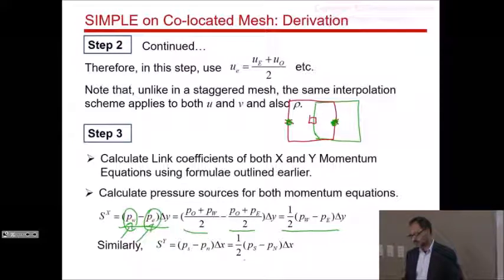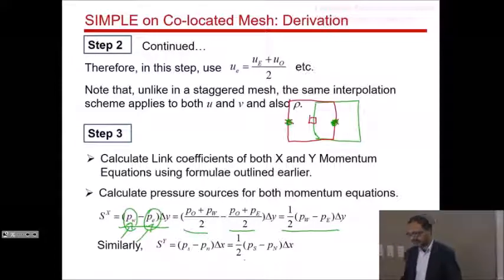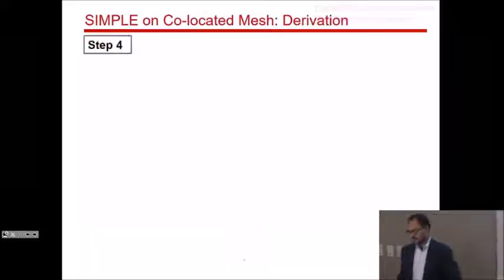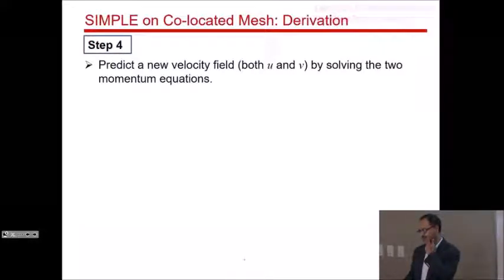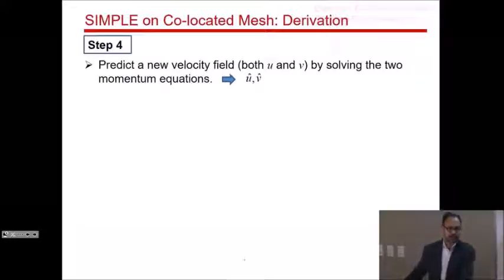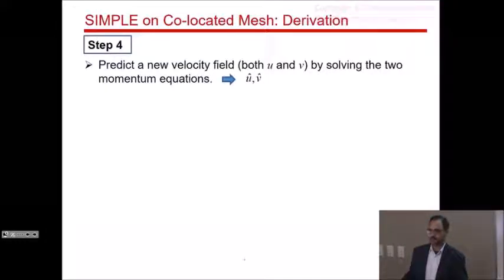Similarly, for the y-momentum equation, the source term will be (1/2)(P_S − P_0)·Δx. Step four: predict a new velocity field by solving the two momentum equations using ADI, giving u-hat and v-hat. This is the inner iteration solving in correction form with inertial damping — no change from what you do for a staggered mesh.